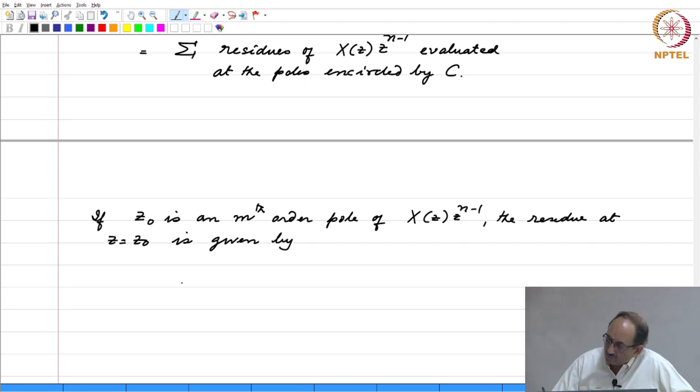Remember, X(z) times z to the n minus 1 can be written as gamma(z) by (z minus z naught) to the m. All I have done is, I have isolated the (z minus z naught) power m separately.